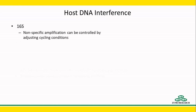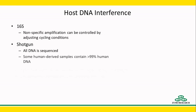The impact is controllable by adjusting PCR cycles and optimizing primers. On the other hand, the interference of host DNA is a much more difficult problem for shotgun metagenomic sequencing. Depending on the sample type, some samples can contain over 99% host DNA.